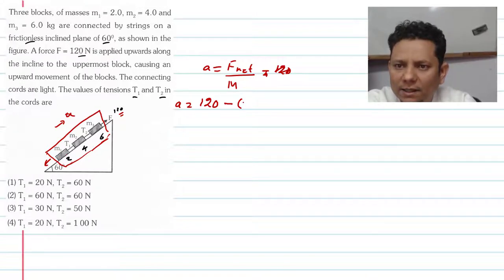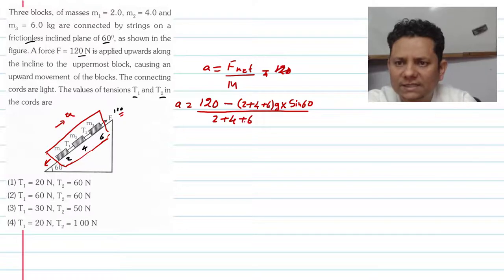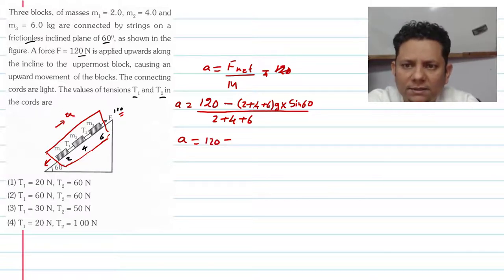The net force will be F_net divided by total mass equals acceleration. So Mg sin theta is 2 plus 4 plus 6 multiplied by g multiplied by sin 60 degrees divided by total mass, which is 2 plus 4 plus 6. So the acceleration A will be 120 minus 12 times g sin 60 divided by 12, which equals 10 minus 5 root 3.